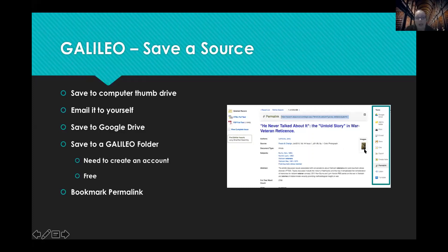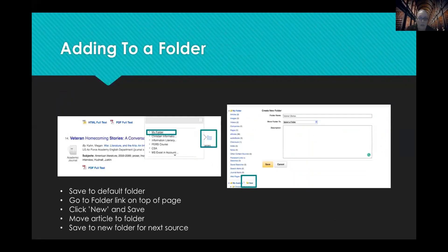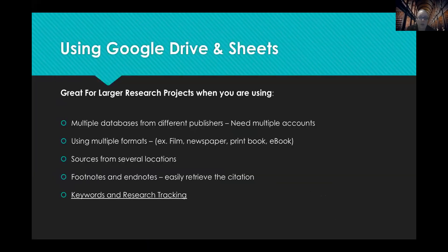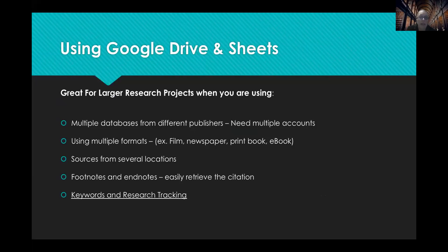You can do a lot of the same things in Galileo regardless of the database. When saving a link, remember to save the permalink — using the browser bar isn't going to bring you back to the source; it'll just give you an error page. Within a source, you can save it to a folder, print it, email it, get the citation, or create a note. Using a spreadsheet is really handy because you can keep all your search information from multiple locations, add the citation, and easily retrieve it later. I recommend using Google Drive and Google Sheets because it's free, the school provides it, and most databases allow you to save to it.